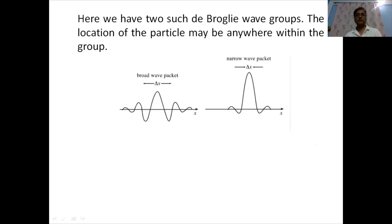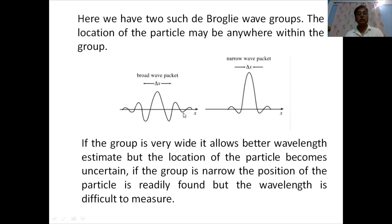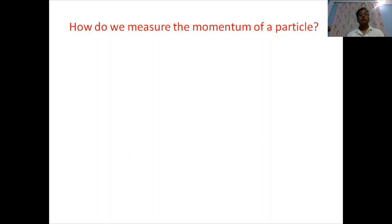Here we have two such de Broglie wave groups. The location of the particle may be anywhere within the groups — one wave group associated with one moving particle and another with another. If the group is very wide, it allows a better wavelength estimate, but certainly the location of the particle becomes uncertain. However, if the group is very narrow, the position of the particle is readily found, but the wavelength is difficult to measure.